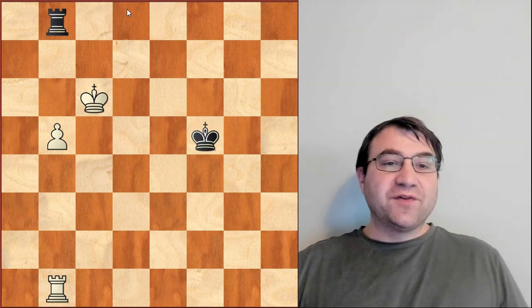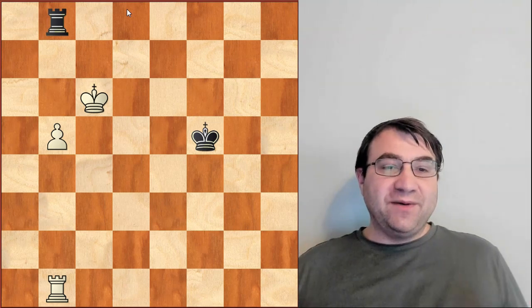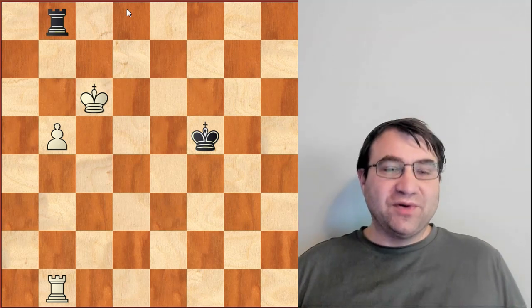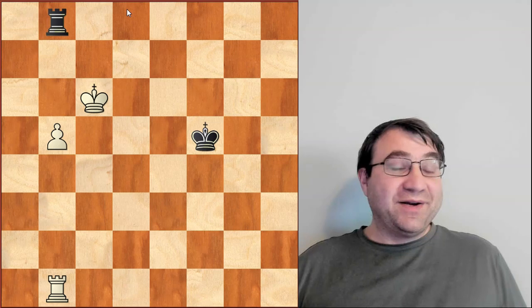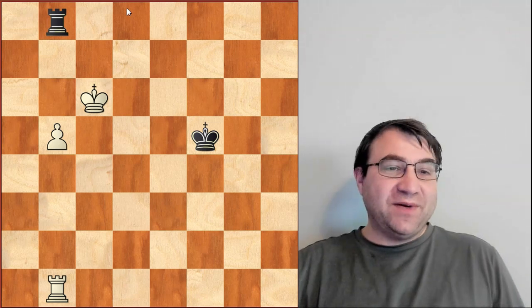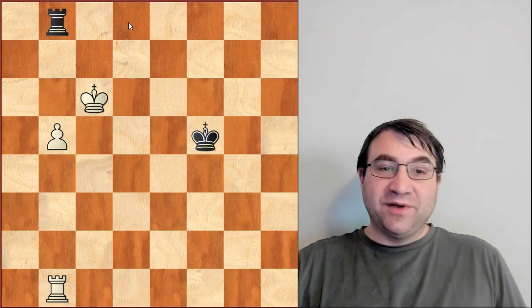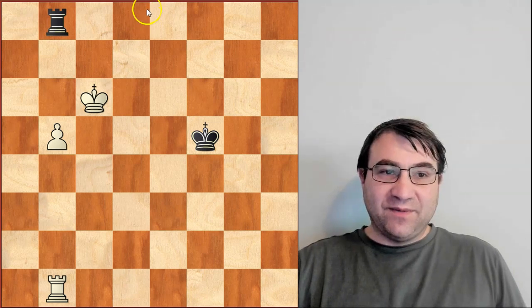So those are all the situations where the three rank separation principle achieves a draw and all the situations where the three rank separation principle is not quite enough to get the draw and where white is going to be winning anyways. I hope you found this video helpful. I hope you found these ideas useful and I hope you can use some of these ideas in your own games. Thank you very much for watching.